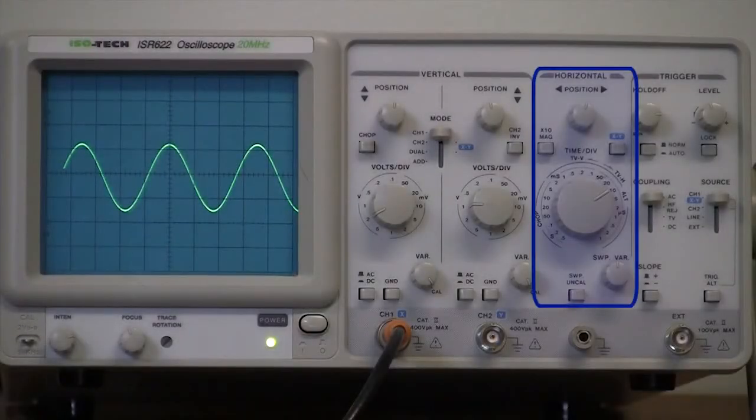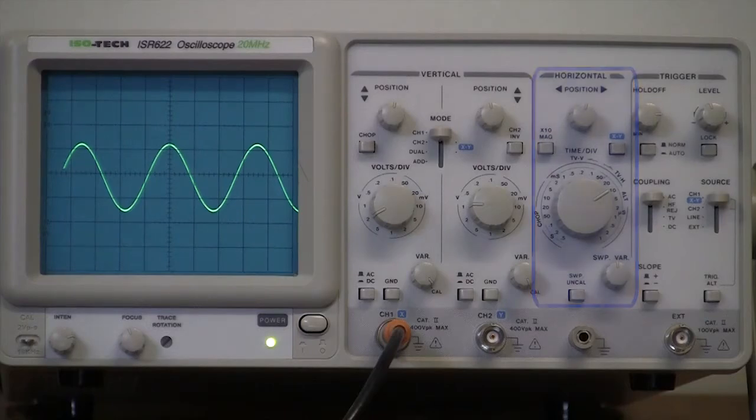The set of controls in the middle of the oscilloscope vary the position and scaling of the horizontal, or time axis, of the signal displayed on the oscilloscope's screen.